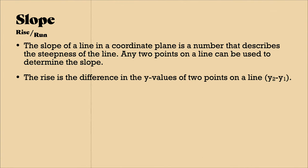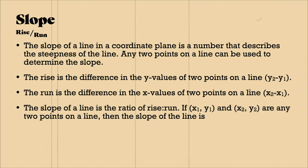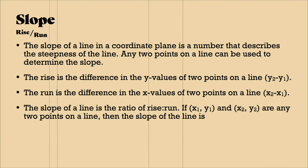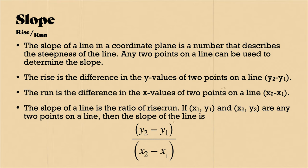The rise is the difference in the y values of the two points, y2 minus y1, and the run is the difference in the x values of the two points on the line, x2 minus x1. The slope of the line is the ratio of rise to run. So if x1, y1, and x2, y2 are any point on the line, then the slope of the line is y2 minus y1 over x2 minus x1 or rise over run.